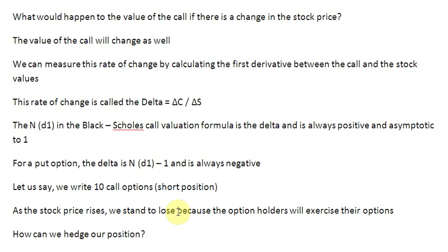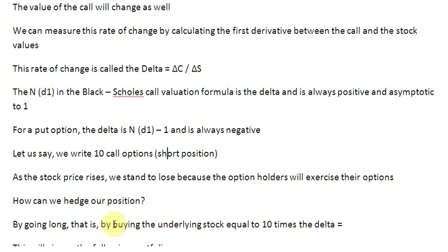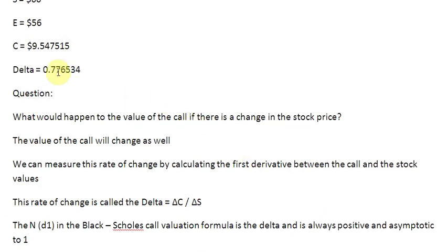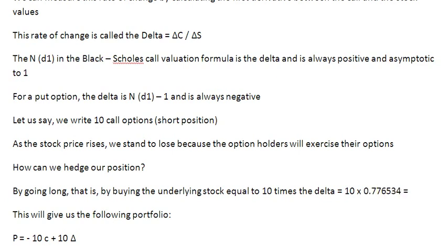We know hedging means taking an offsetting position. Since our current position is short, we can hedge by going long — specifically, by buying the underlying stock equal to 10 times the delta value. We need to know how much stock to buy, and the answer is 10 times the delta, because we have written 10 call options. Delta basically gives us the hedge ratio. So, 10 times the delta value of 0.776534 gives us 7.76534 shares to buy.